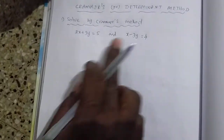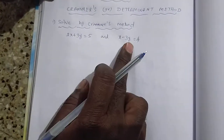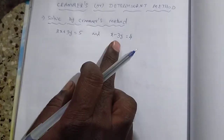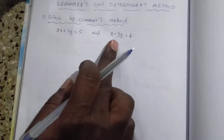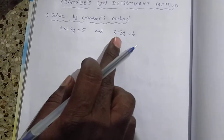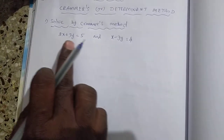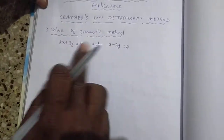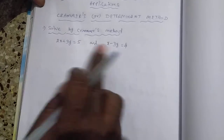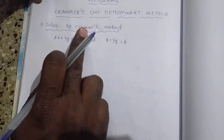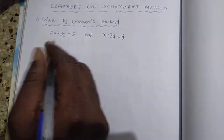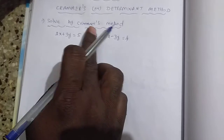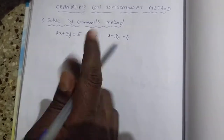So how to solve these two equations? We have to find the value of X and Y. By solving these two equations, we have to use Cramer's method. So what is the procedure for Cramer's method?